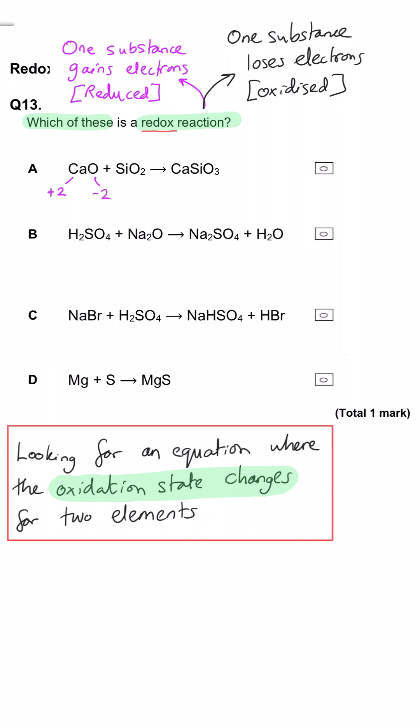In A, calcium begins as plus 2 and silicon begins as plus 4. In the products, both of them have that same oxidation state because plus 2 and plus 4 balances out that minus 6 from the 3 oxygen.